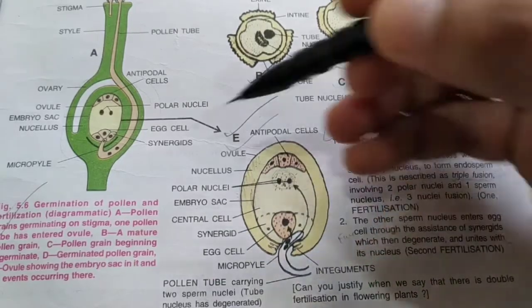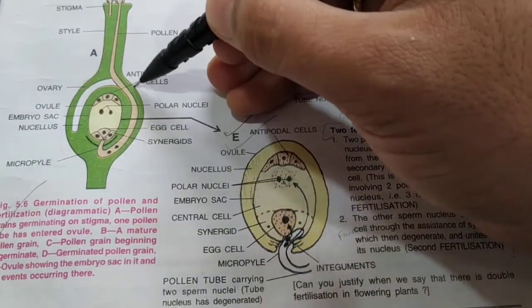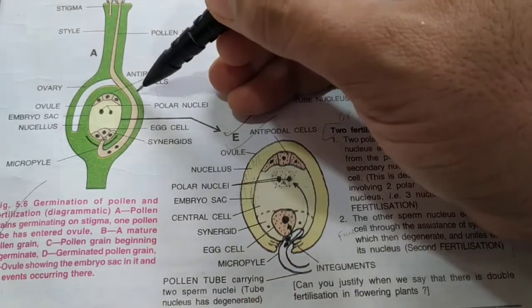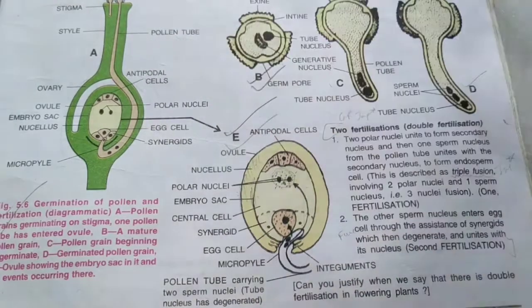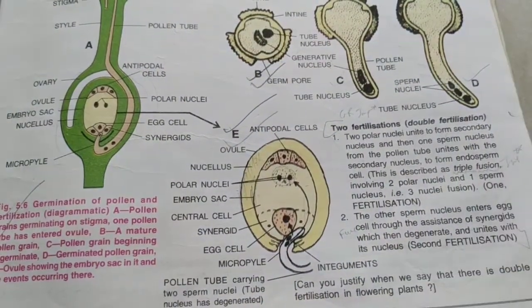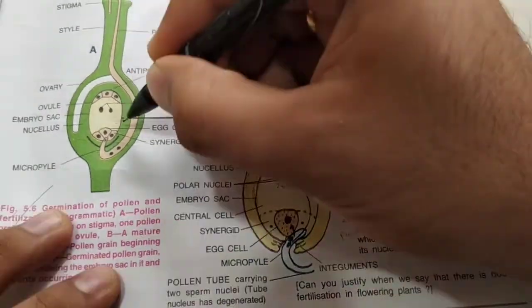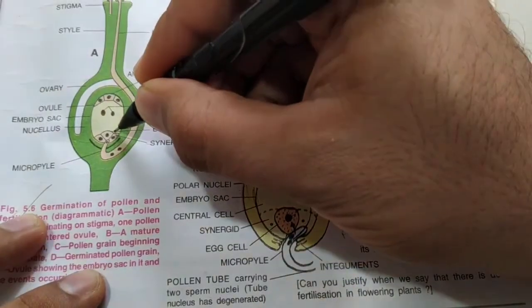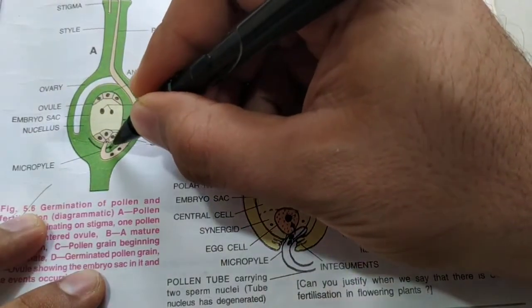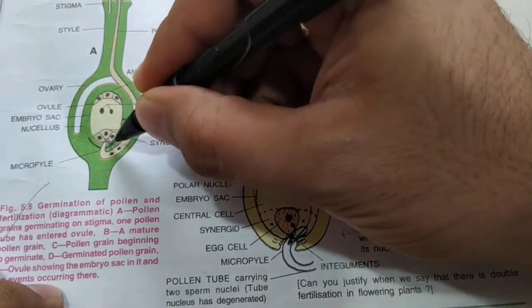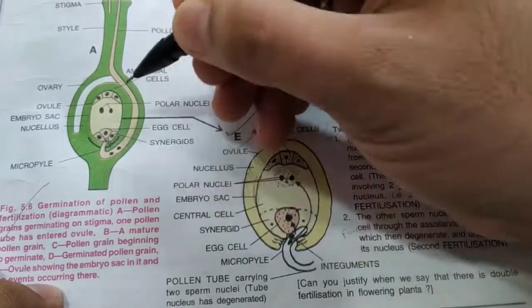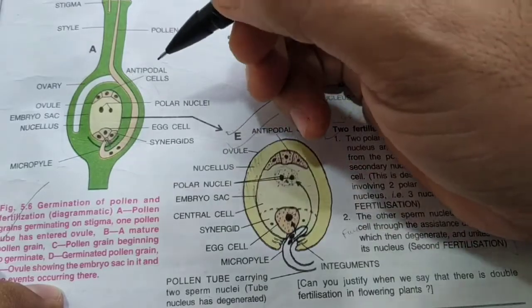The wall of the ovary will become the fruit wall called the pericarp. The point of attachment of the ovule to the ovary, called the placenta — which is the nutritive tissue — becomes the stalk of the seed.